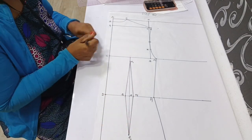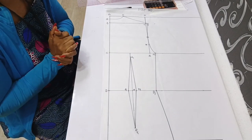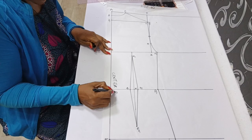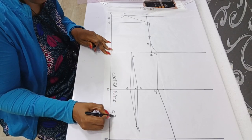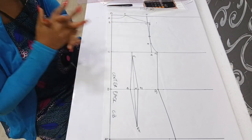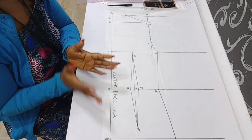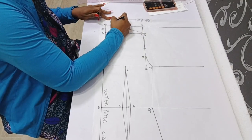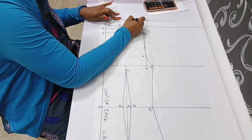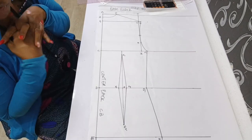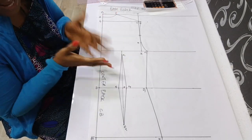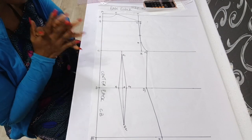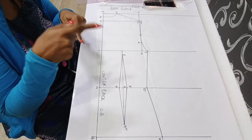The back bodice is complete. Label the center back — you can abbreviate it as CB. Always label your pattern and note that this is your basic bodice. That is the back bodice of our Italian pattern. In the next video we'll draft the front. If you liked this, please subscribe to my channel and watch out for part two. My name remains Nita and I'll see you in the next pattern class.